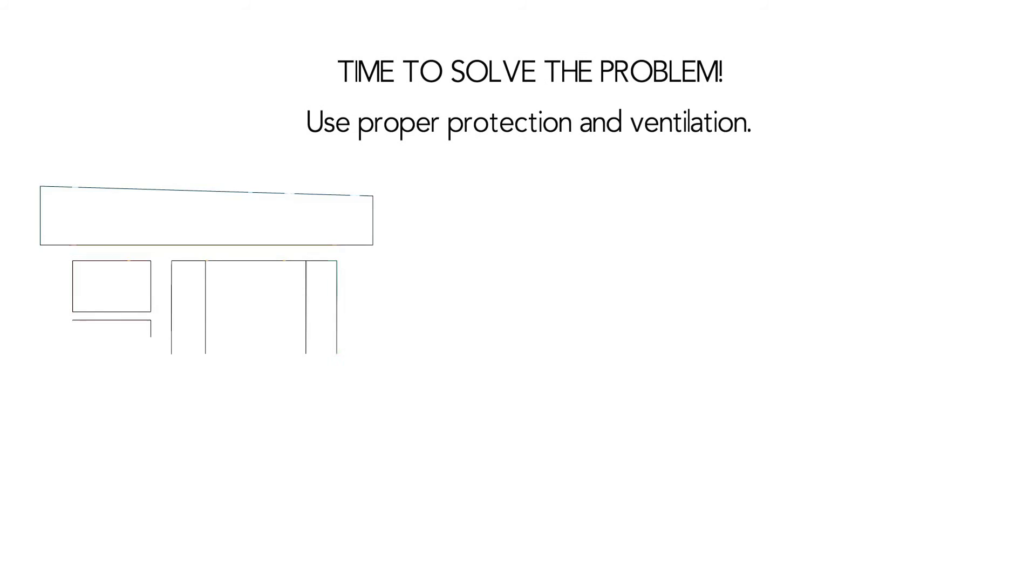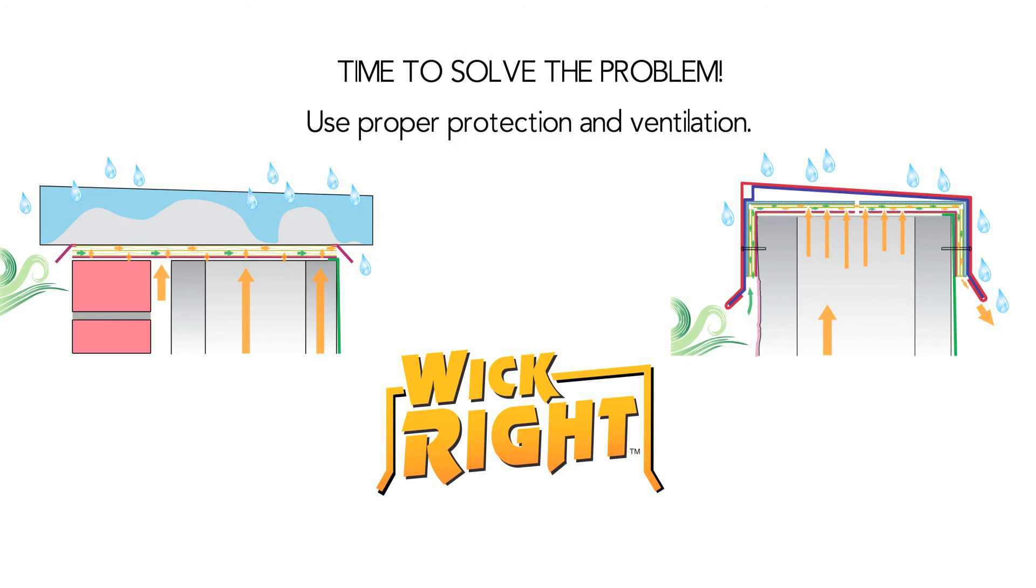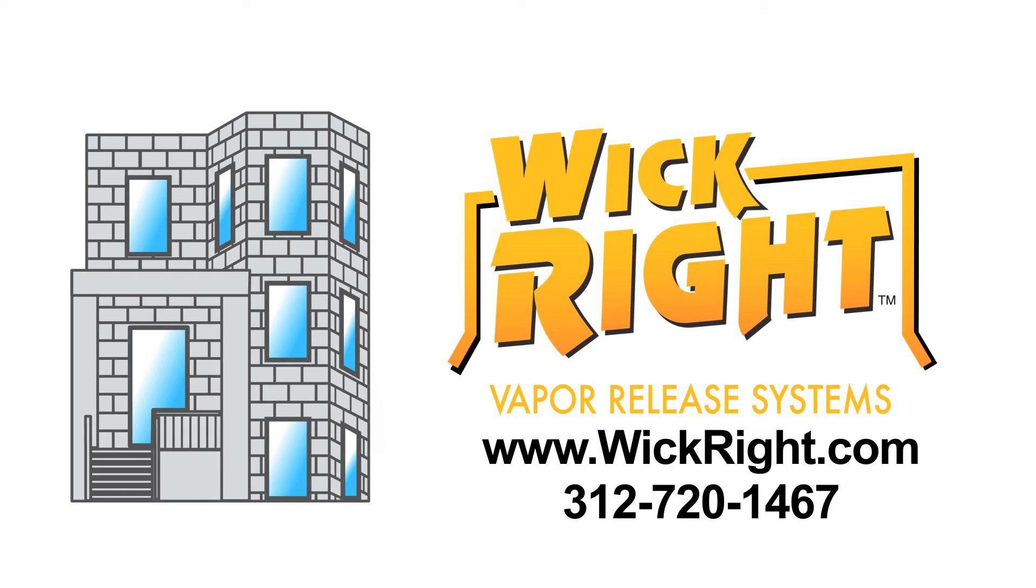Now it's time to solve the problem with proper protection and ventilation using an appropriate WickRite vapor release system. Visit WickRite.com for more information. To schedule an initial assessment of your building, call 312-720-1467.